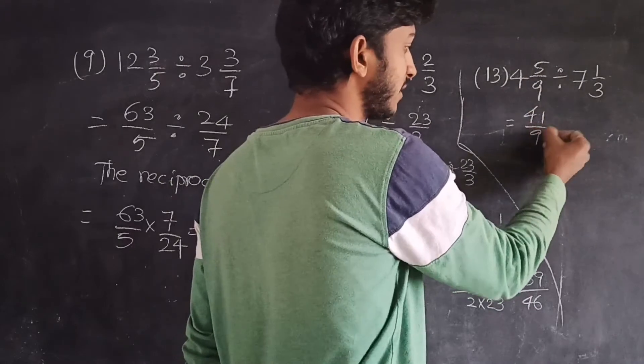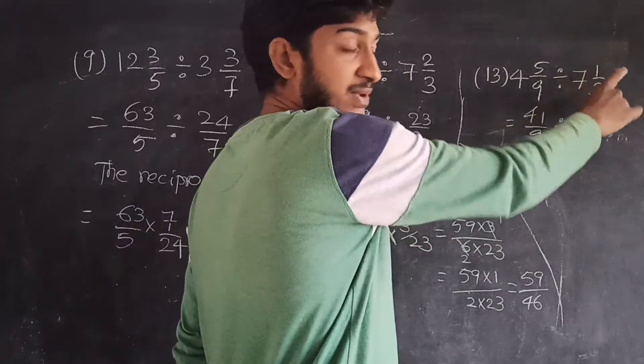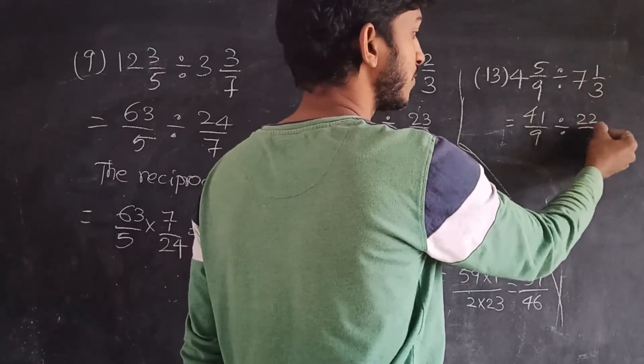Divided by 7 1/3. 3 times 7 is 21, 21 plus 1 is 22. 22 by 3.